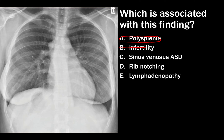Sinus venosus ASD is something you see in partial anomalous pulmonary venous return, particularly on the right. Rib notching is associated with aortic coarctation. Lymphadenopathy is just another red herring. This is an enlarged azygous vein in a patient with heterotaxy syndrome, and a CT of their abdomen would show interruption of the IVC with azygous continuation.